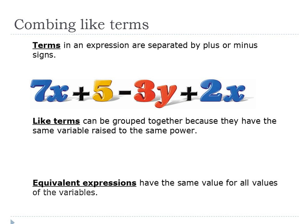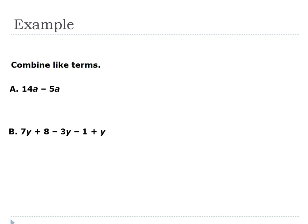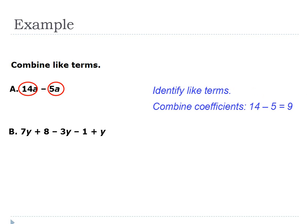In the first example on your notes you have 14A minus 5A. Thinking in terms of hands-on equations, you have 14 pawns and you want to take away 5 pawns. You can do that because they're all pawns. Identify the like terms — the two A's — combine their coefficients: 14 minus 5 makes 9, which gives 9A. Go ahead and write that in your notes now.